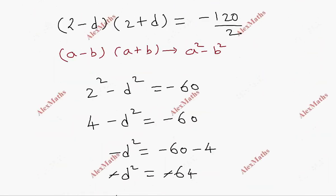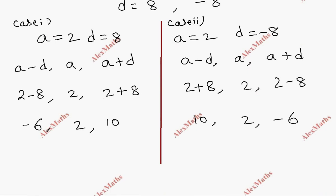So the three numbers are either -6, 2, 10 or 10, 2, -6.